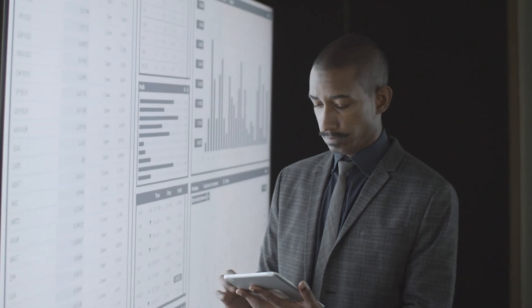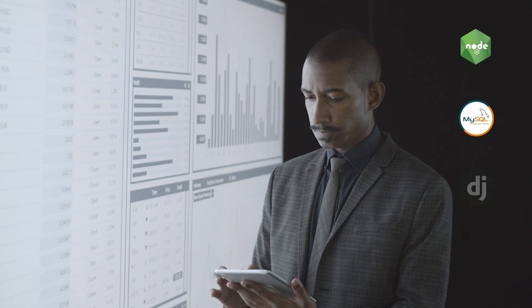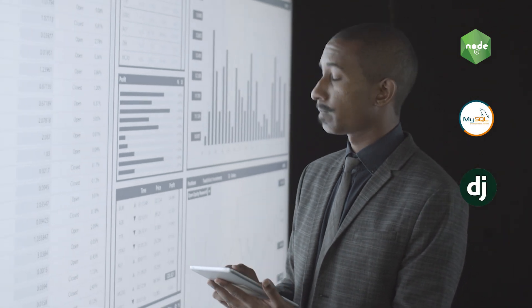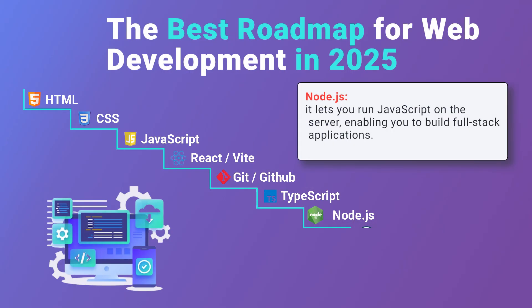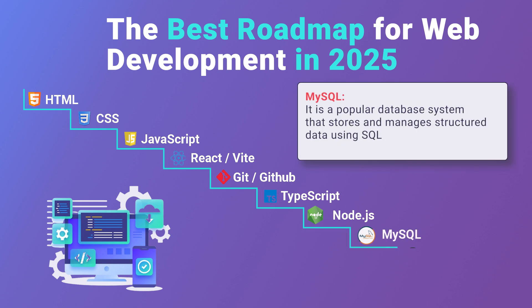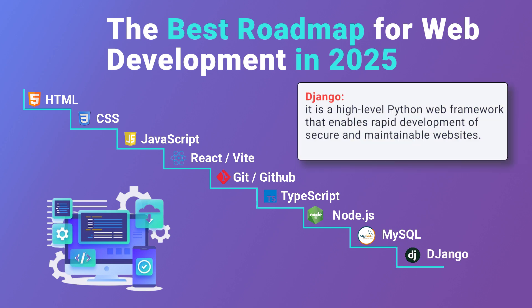The fourth step is to learn Node.js, MySQL, and Django to build server-side logic and work with databases. Node.js lets you run JavaScript on the server, enabling you to build full-stack applications. MySQL is a popular database system that stores and manages structured data using SQL. Django is a high-level Python web framework that enables rapid development of secure and maintainable websites.